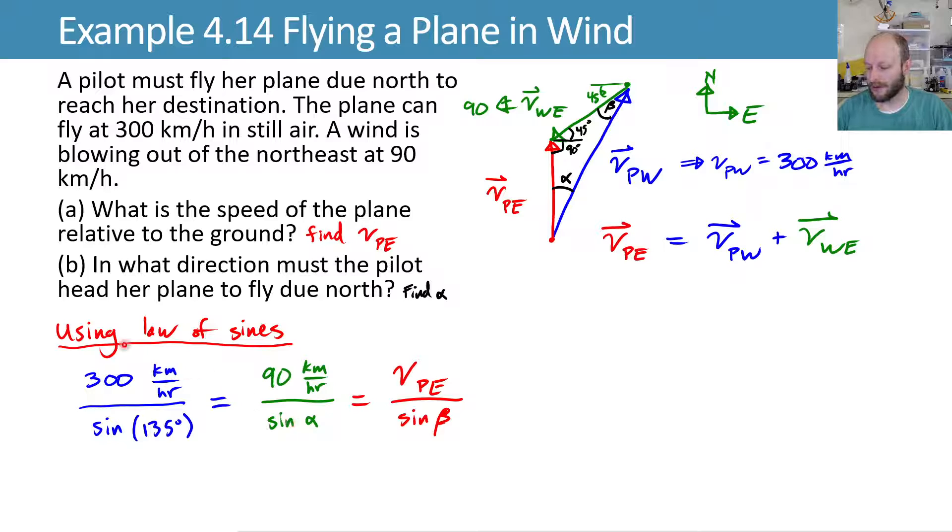So we'll multiply by sine of alpha, divide by the rest of this stuff, and we get sine of alpha is equal to 90 over 300 times the sine of 135. We can take the inverse sine of both sides and we get a relationship that we can evaluate to be 12 degrees.